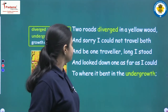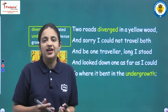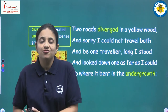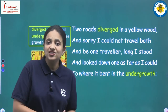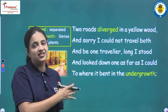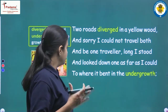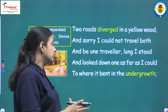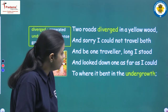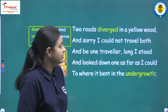Now let us start reading the poem. In poetry, paragraphs are called stanzas, and this poem has four stanzas. This is the first stanza: 'Two roads diverged in a yellow wood, and sorry I could not travel both, and be one traveler, long I stood, and looked down one as far as I could, to where it bent in the undergrowth.'